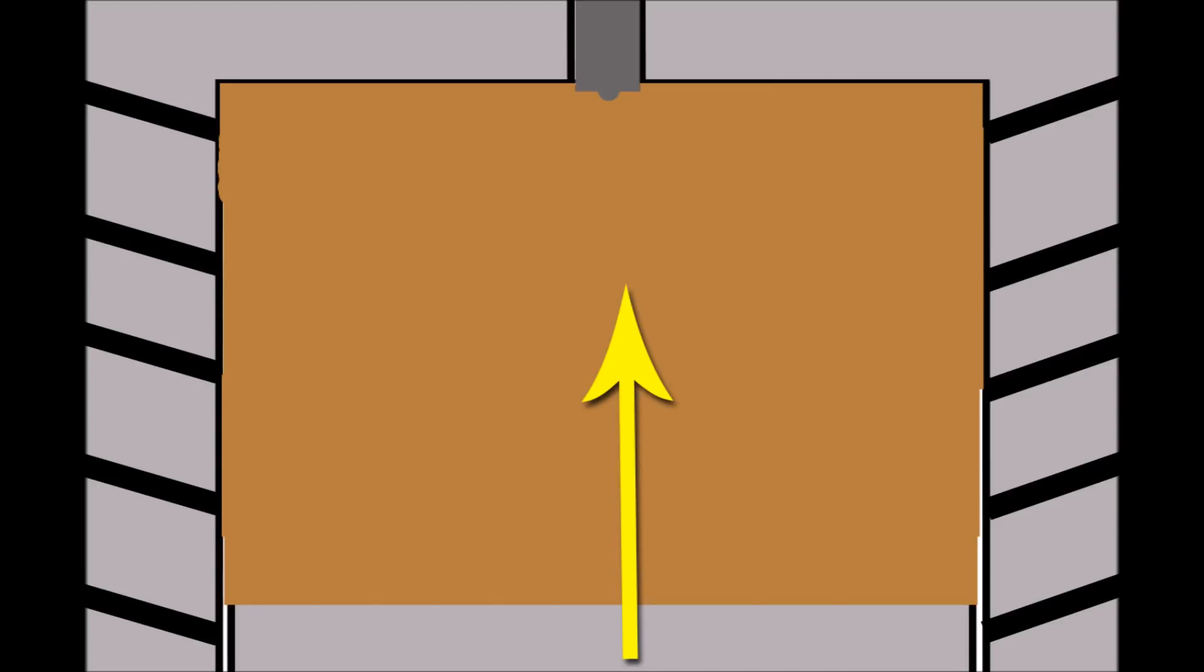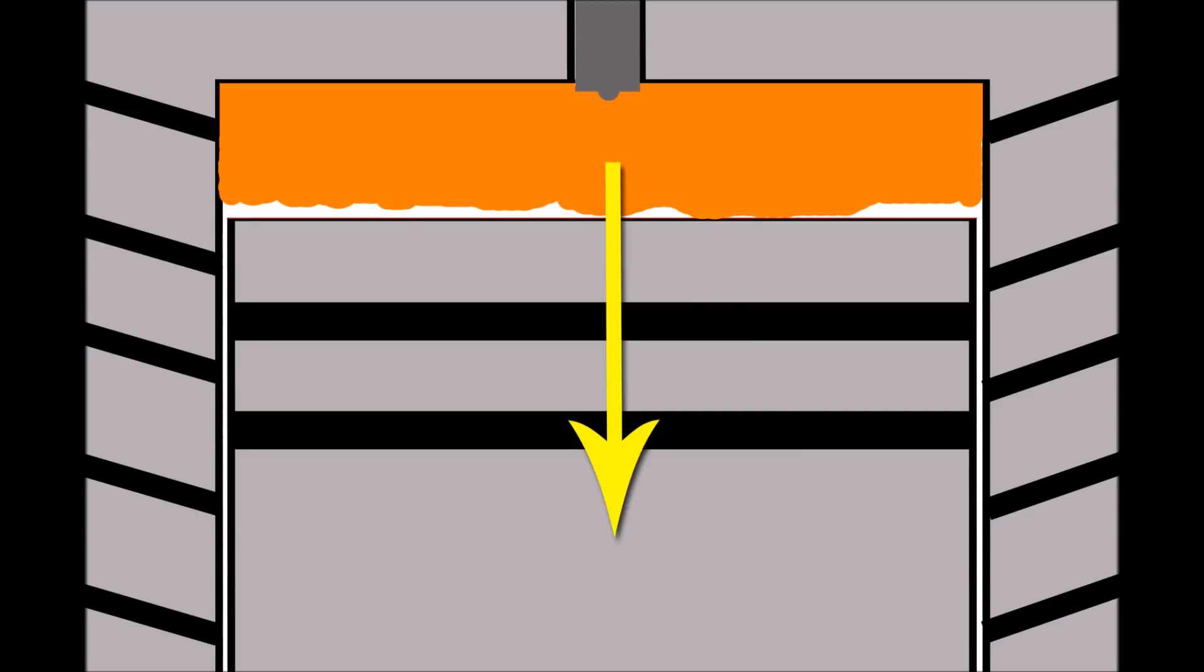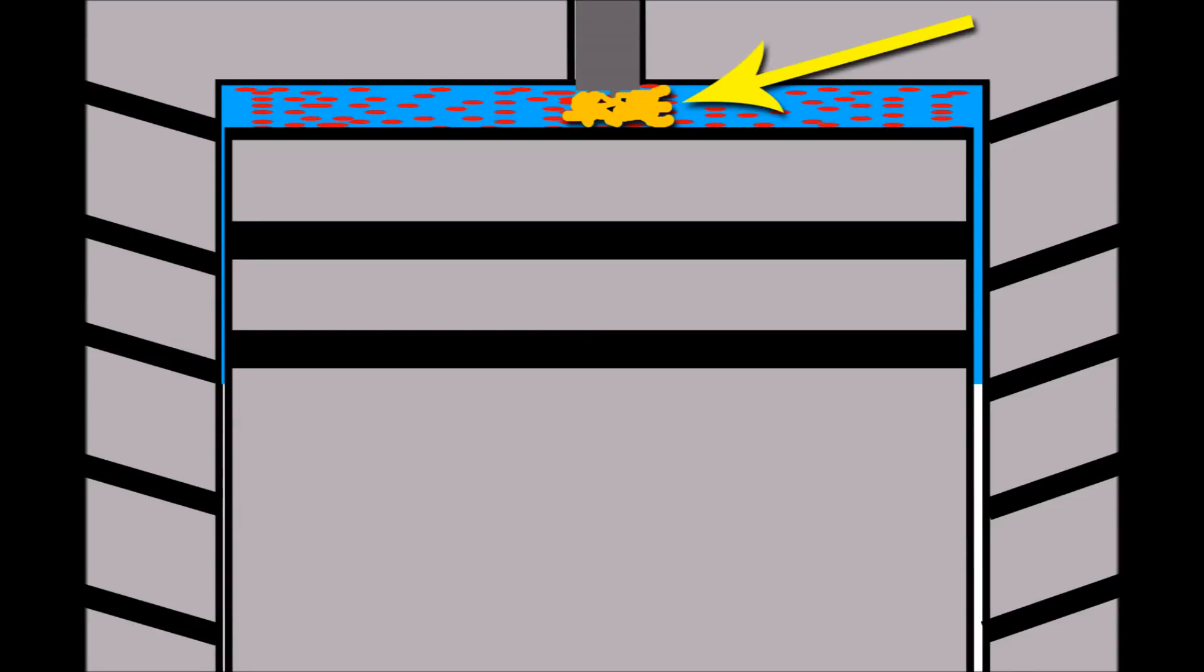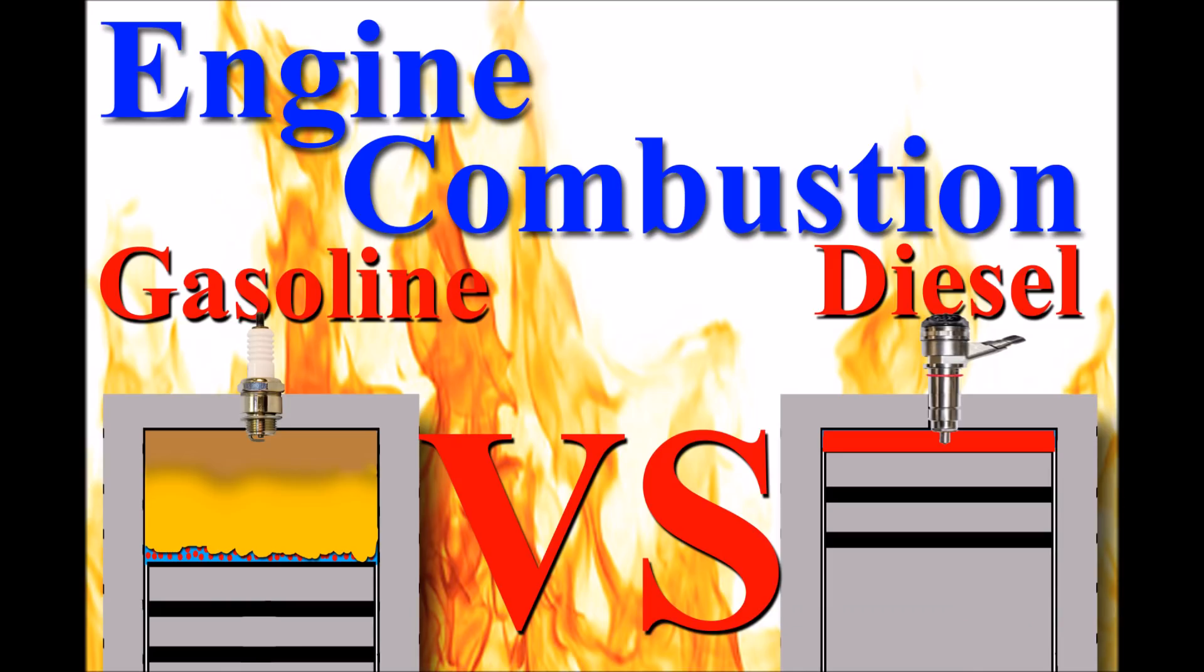The diesel engine produces a much higher level of compression in order to ignite that fuel and create that heat. That's why we call the diesel engines compression ignition. In comparison, this is why we call the petrol engines spark ignition. They don't actually produce the same level of compression as does a diesel engine, and so it needs a spark to ignite that air and fuel.